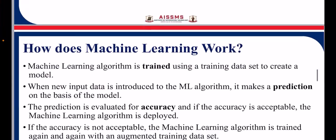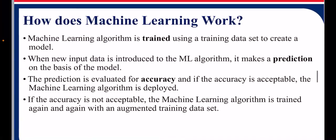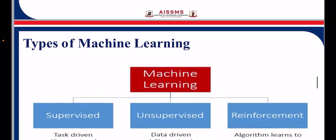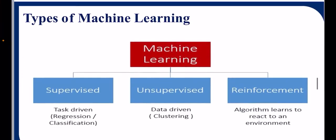How does machine learning work? We first train our machine learning model and then we test it on what we have trained. If it is giving good accuracy or good results, we can use that for deployment. There are three types of machine learning: supervised, unsupervised, and reinforcement.